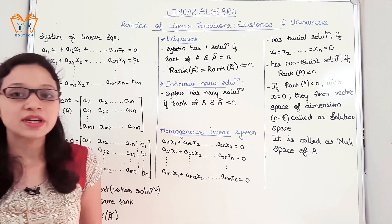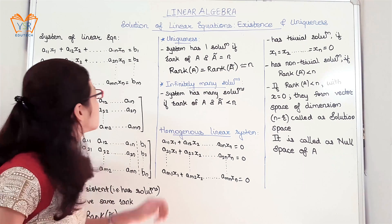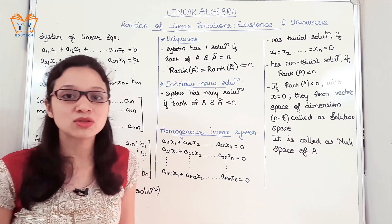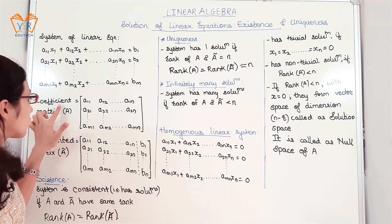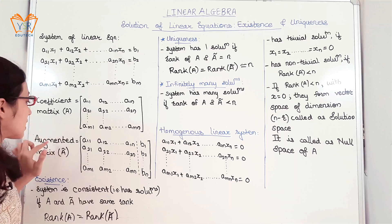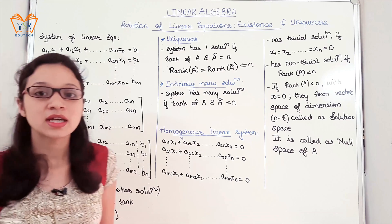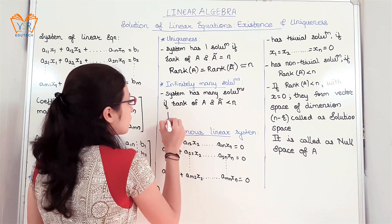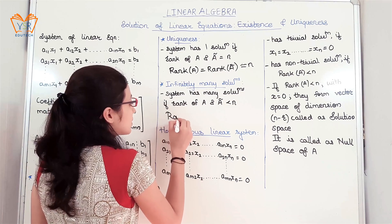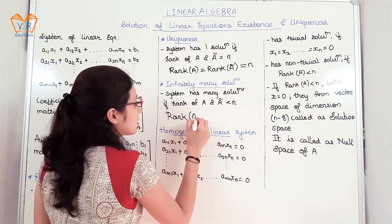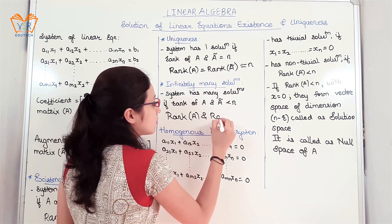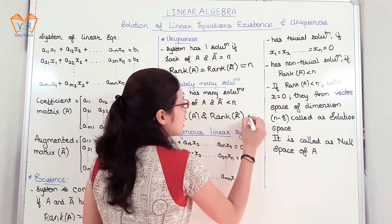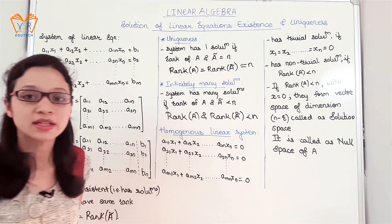The next term is infinitely many solutions. The system of linear equations has many solutions if the rank of the coefficient matrix and the rank of the augmented matrix is less than n — that is, less than the number of unknowns. So we can write: rank of A and rank of augmented matrix is less than n.